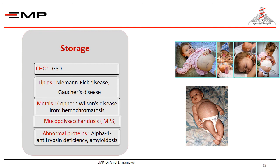This is the end of the first segment. In the next segment, you will learn about glycogen storage disease, lipid storage disease, and alpha-1 antitrypsin deficiency.